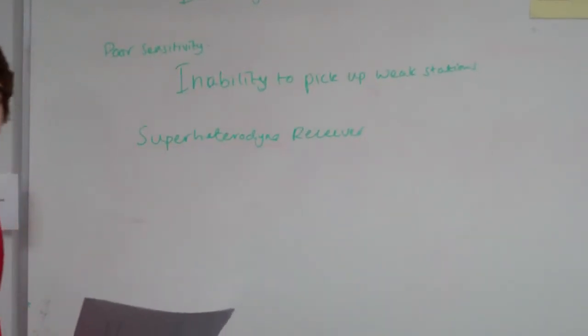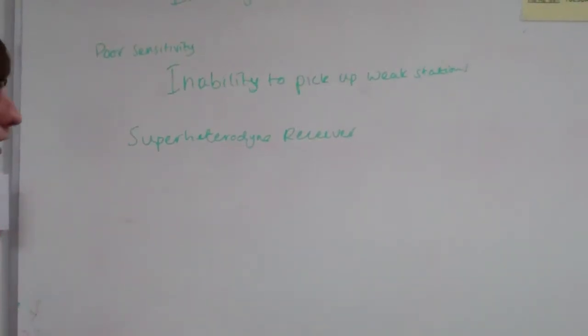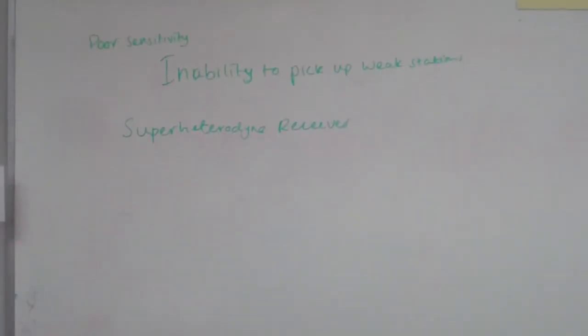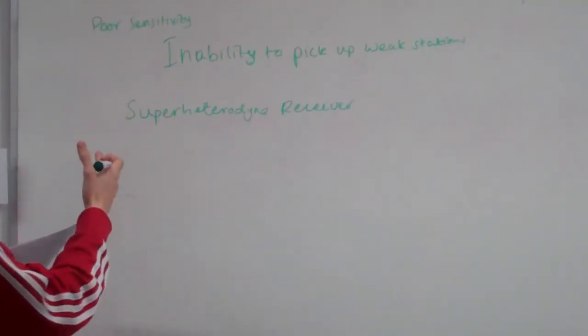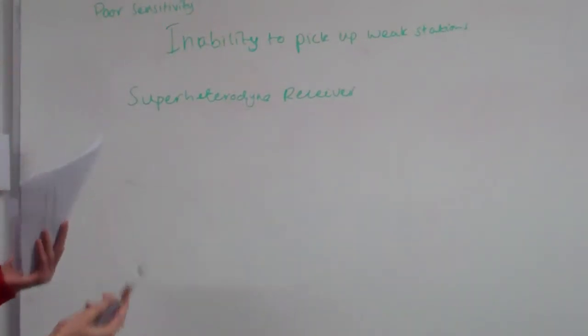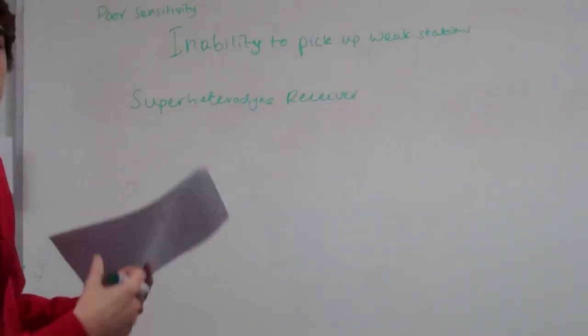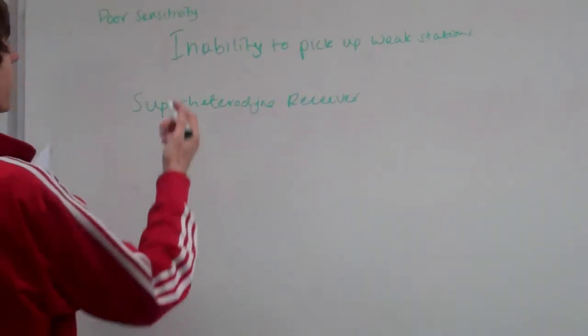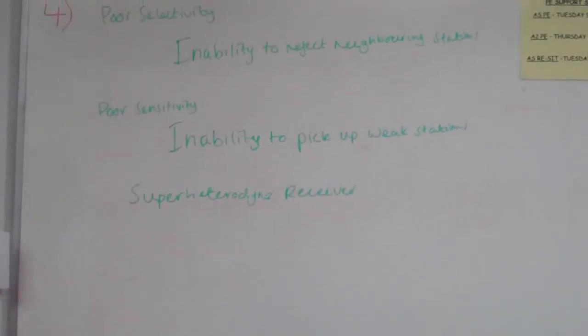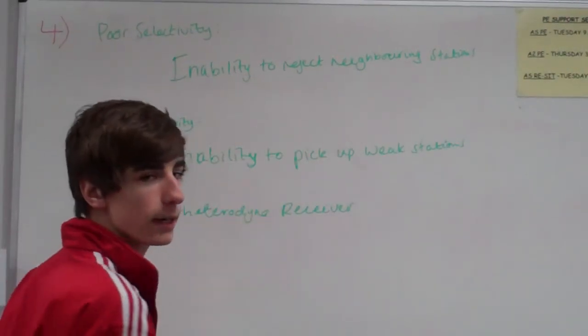Now, they may ask different things, such as: the superheterodyne receiver has better selectivity and better sensitivity compared to the simple radio receiver. Explain what these terms mean. And if it were to ask that, you can't say selectivity is the inability to reject neighbouring stations, you have to say selectivity is the ability to reject neighbouring stations, and things like that, just to make sure that what you're saying is in context with what they're asking, and you're not just remembering this and copying it down.